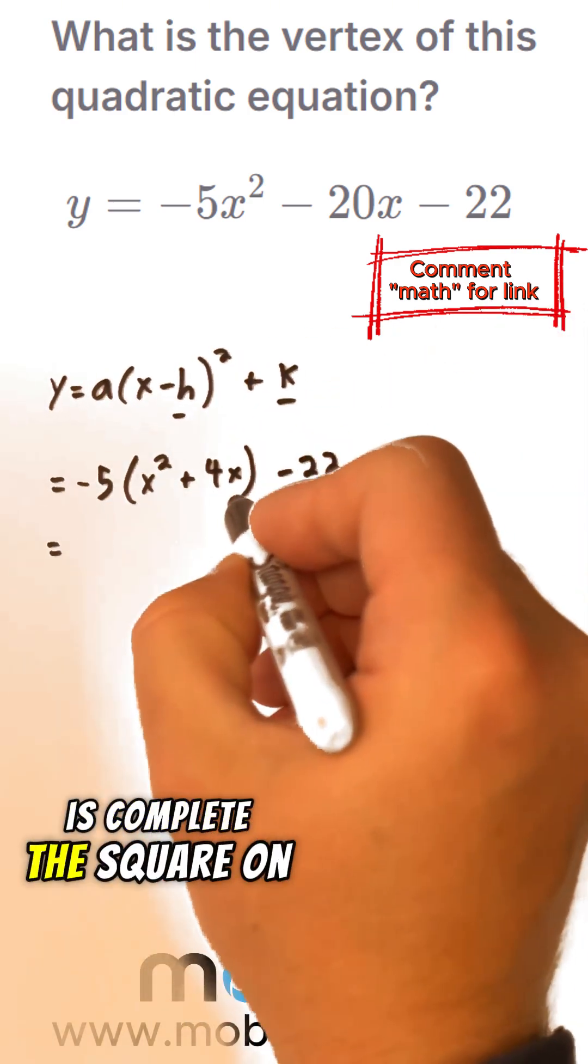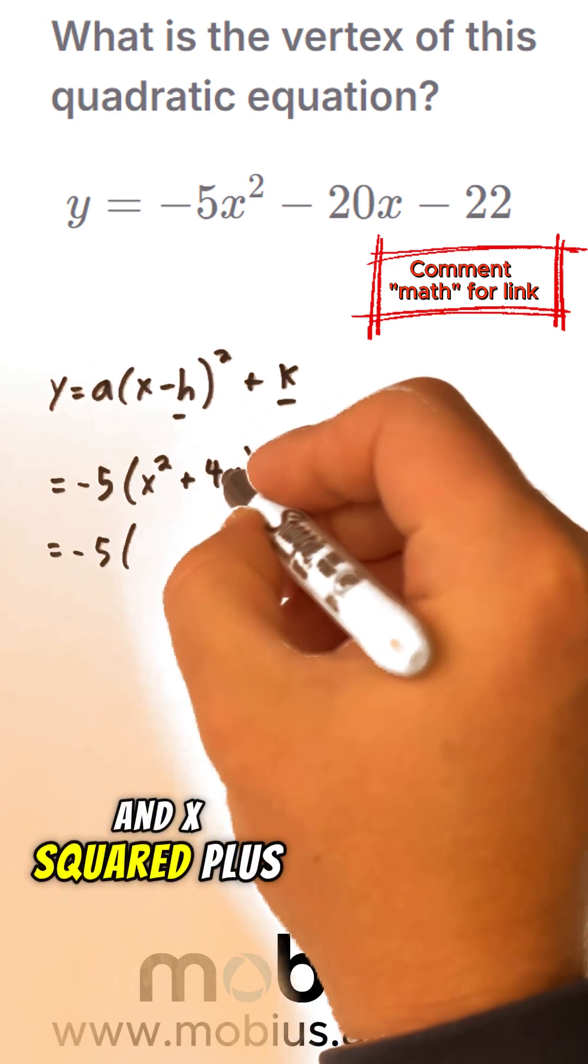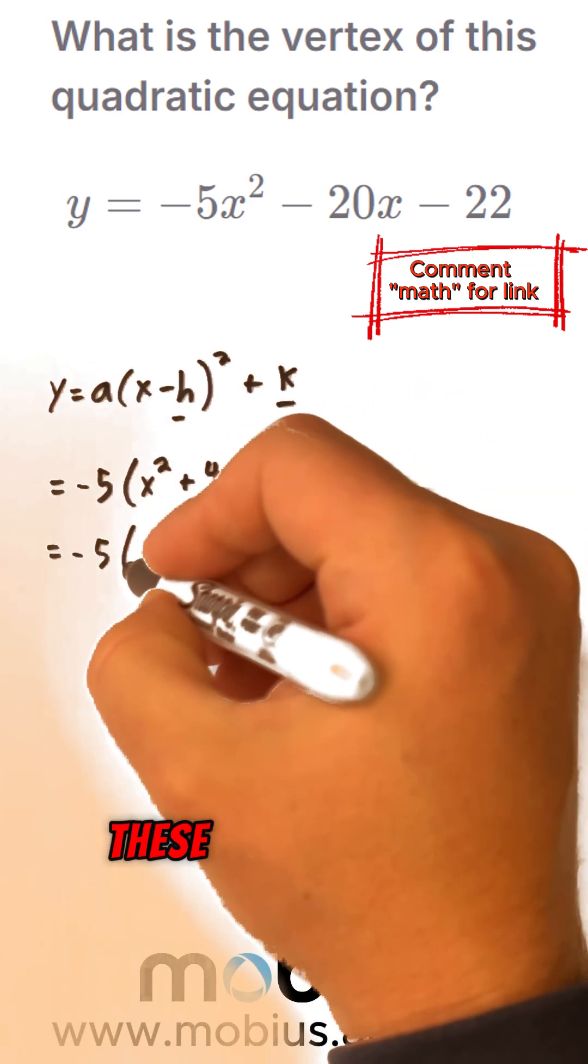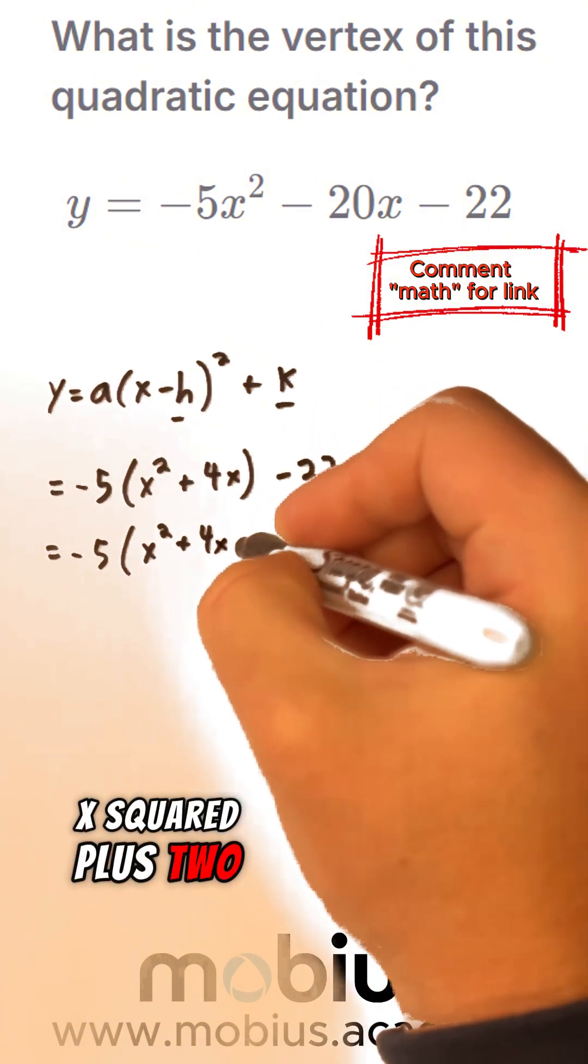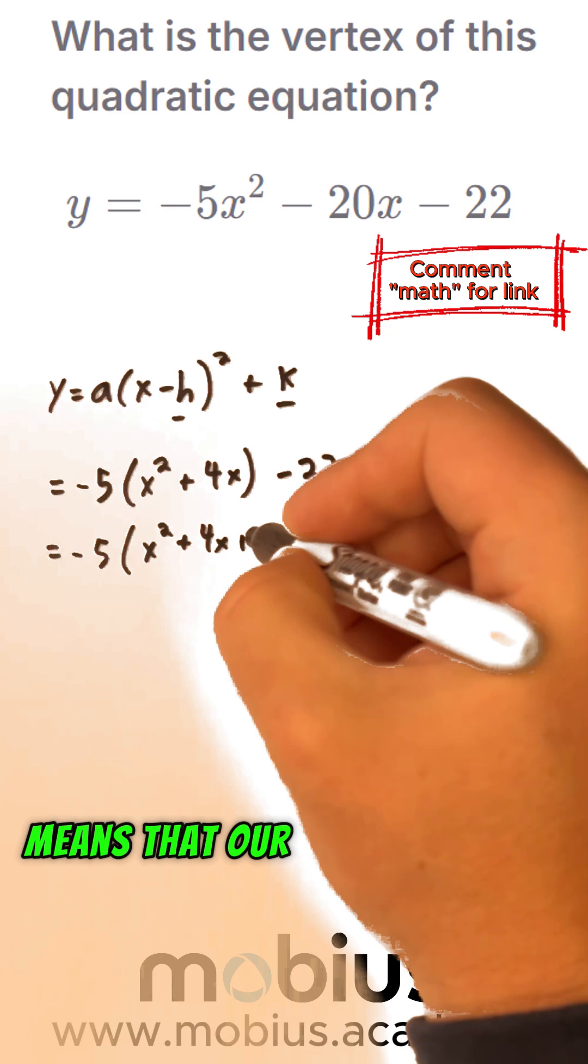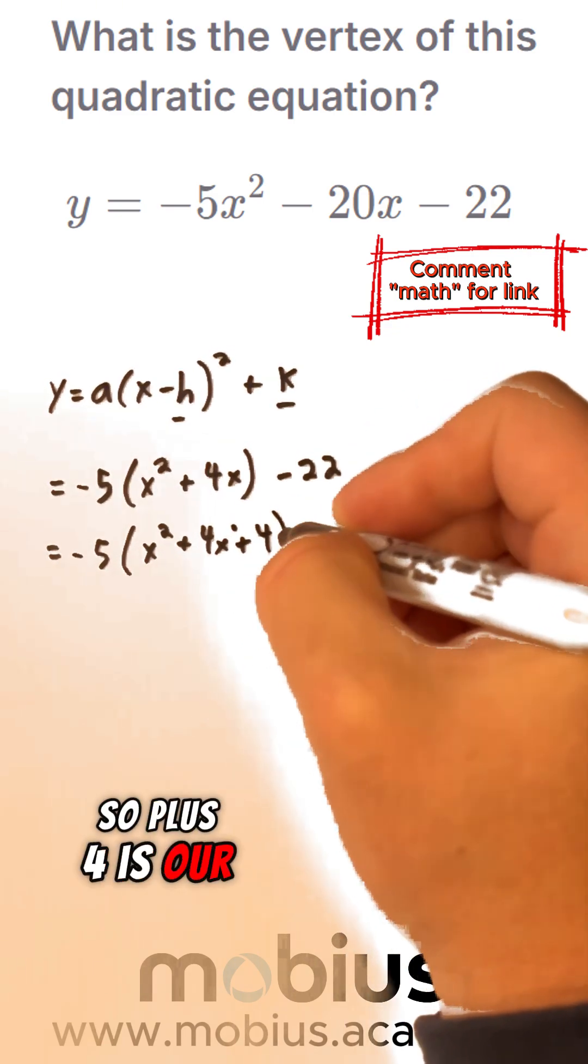And then what we want to do is complete the square on this term. So we've got a minus 5 and x squared plus 2 of these. x squared plus 2 of the x terms means that our square is going to be 2. So plus 4 is our square.